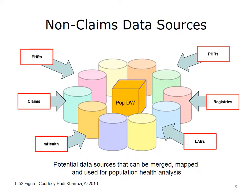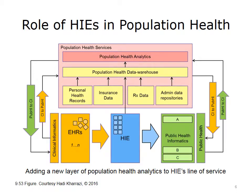This diagram shows the potential data sources that can be incorporated into a population data warehouse, POP-DW. Data sources may include insurance claims, electronic health records, EHRs, mobile health, mHealth platforms, personal health records, PHRs, registries, or lab records. HIEs can play an important role in population health analytics in addition to providing clinical or traditional public health services. Various data sources can be added to the existing data at an HIE to empower the predictive power of population health models such as PHRs, insurance data, pharmacy data, and other administrative data repositories.